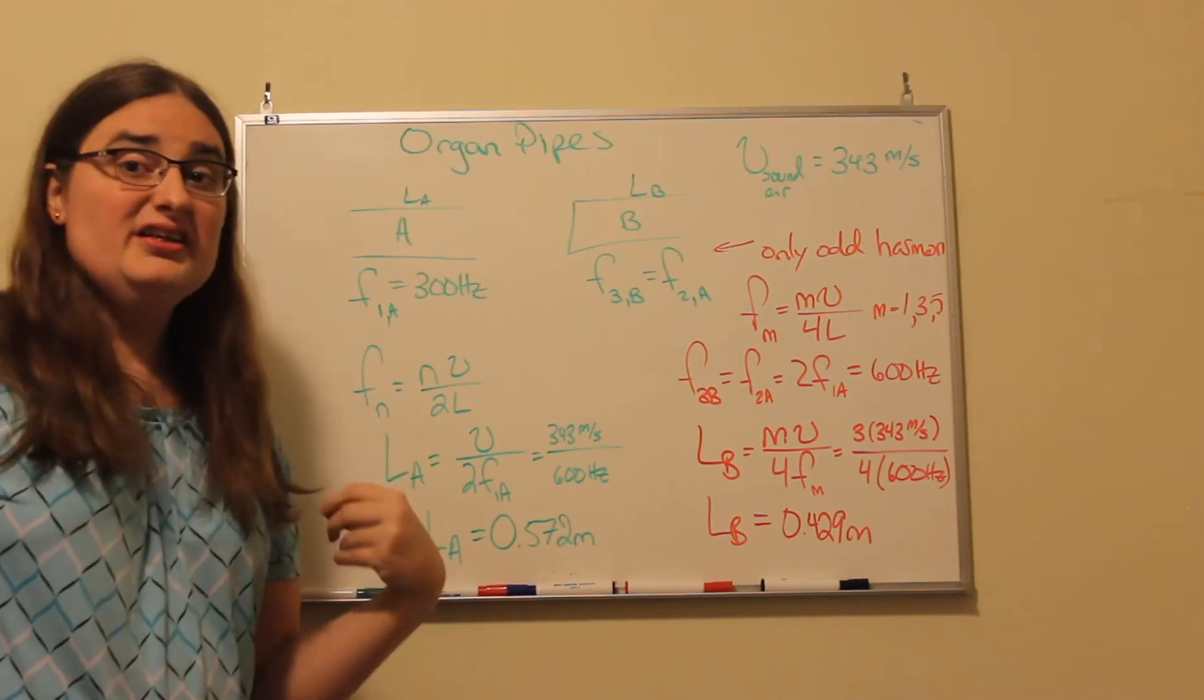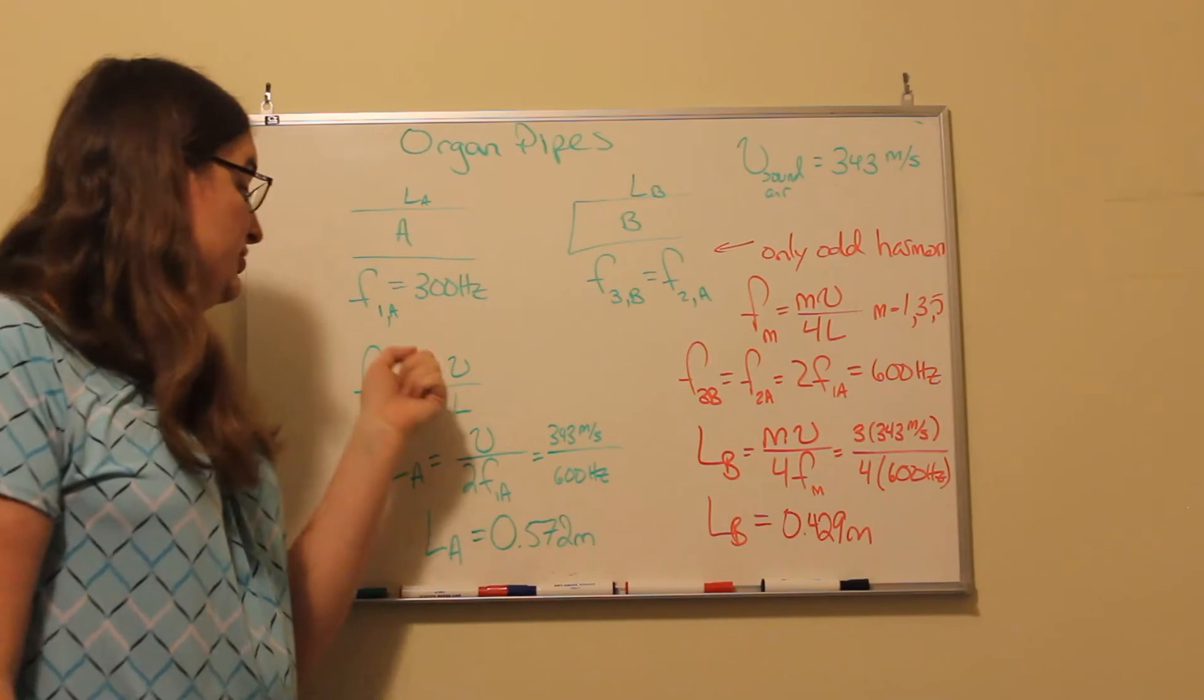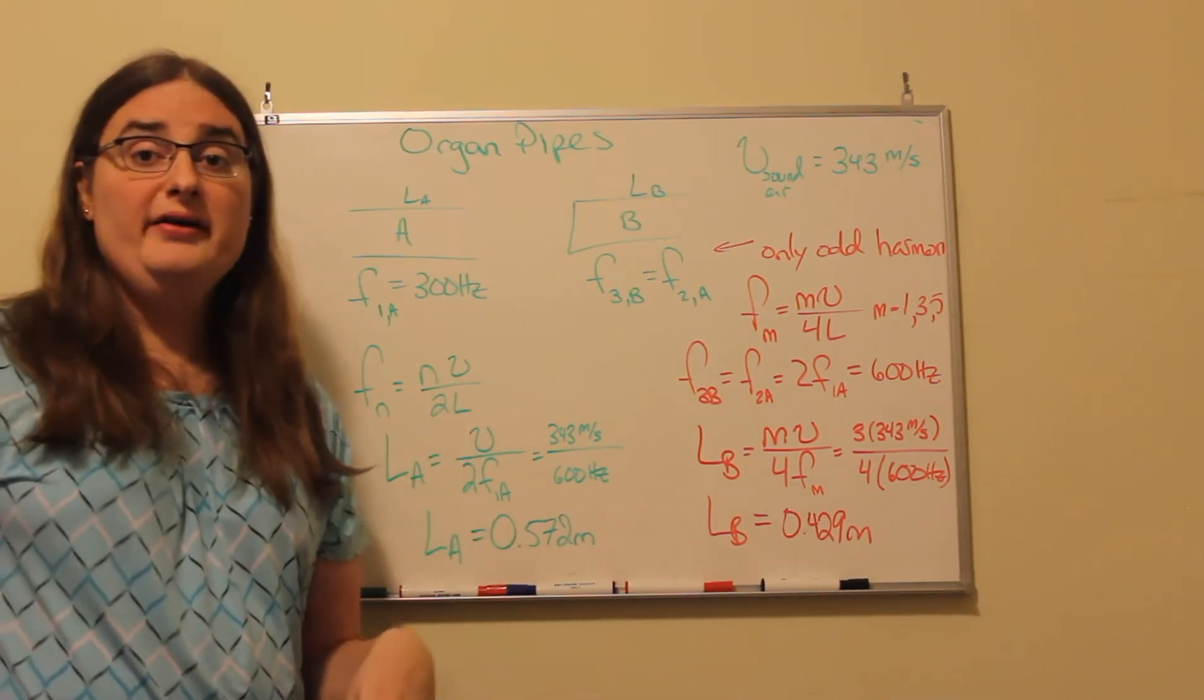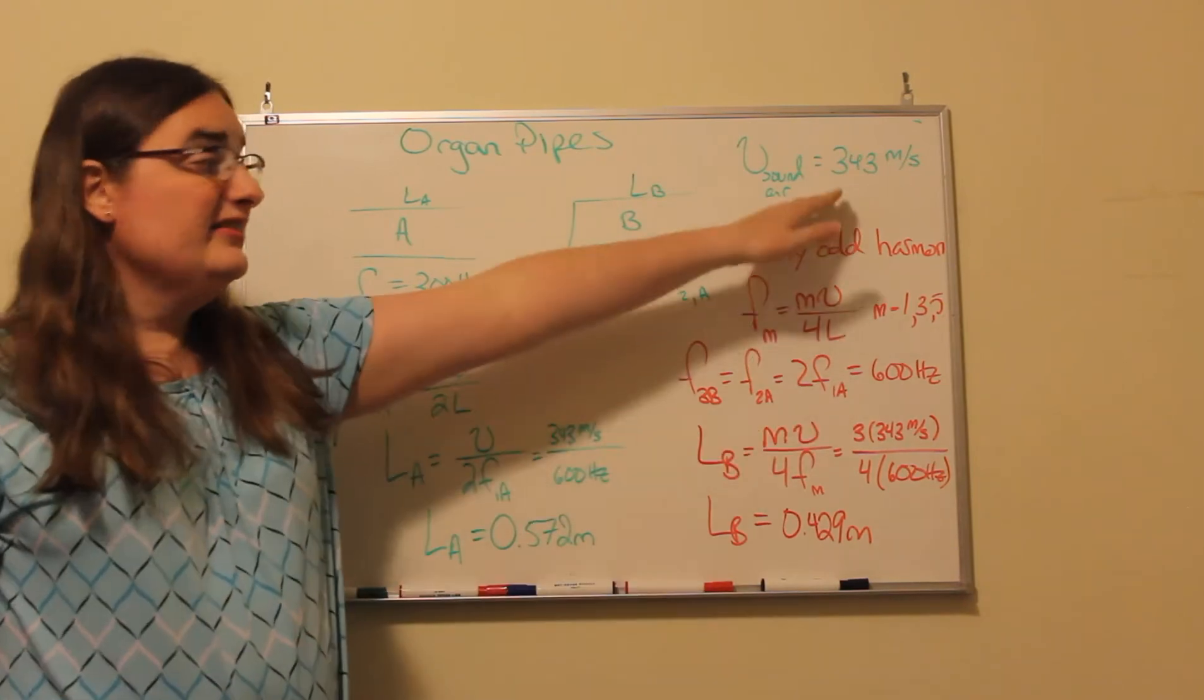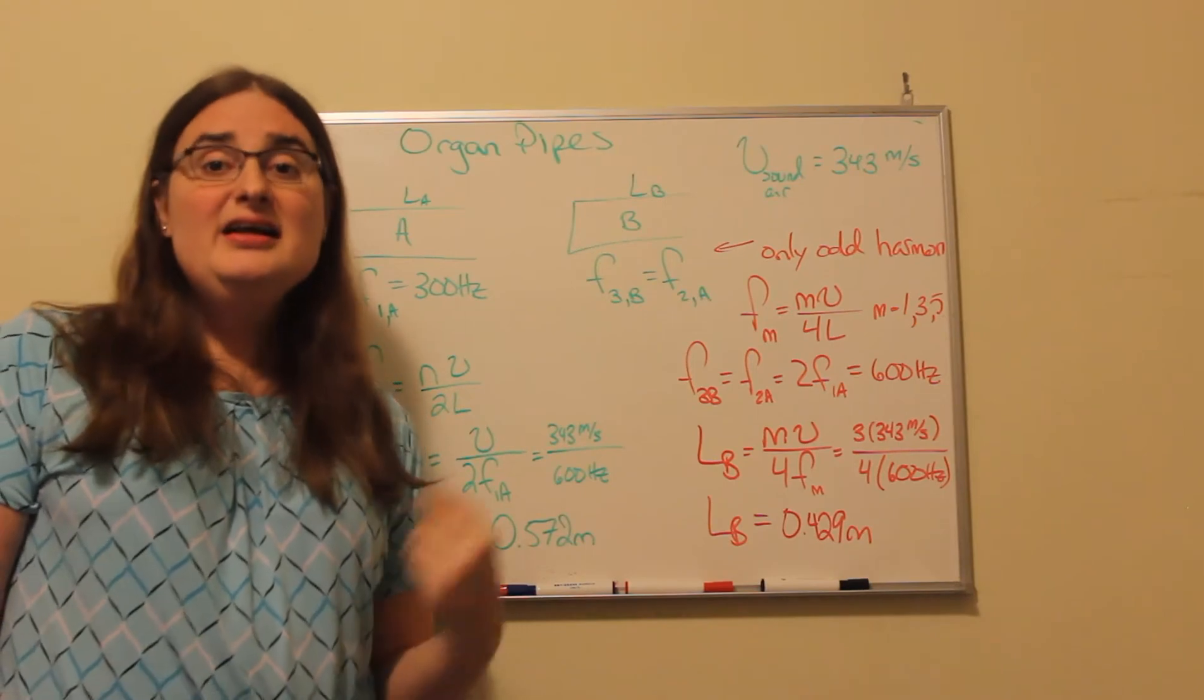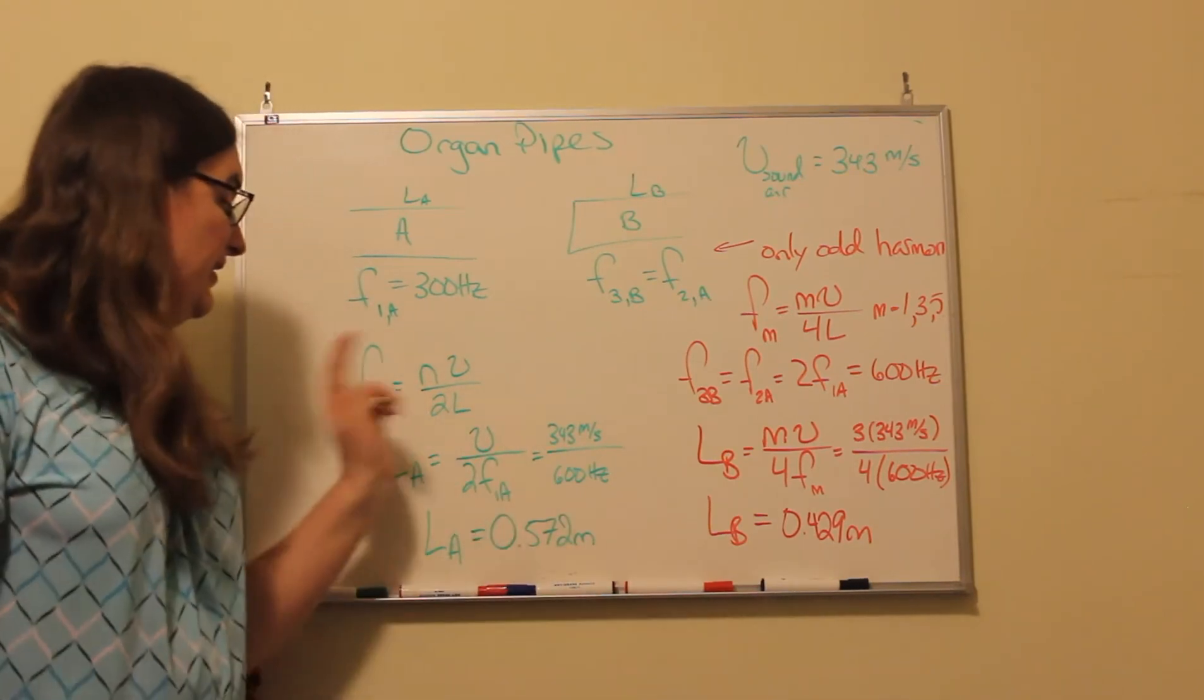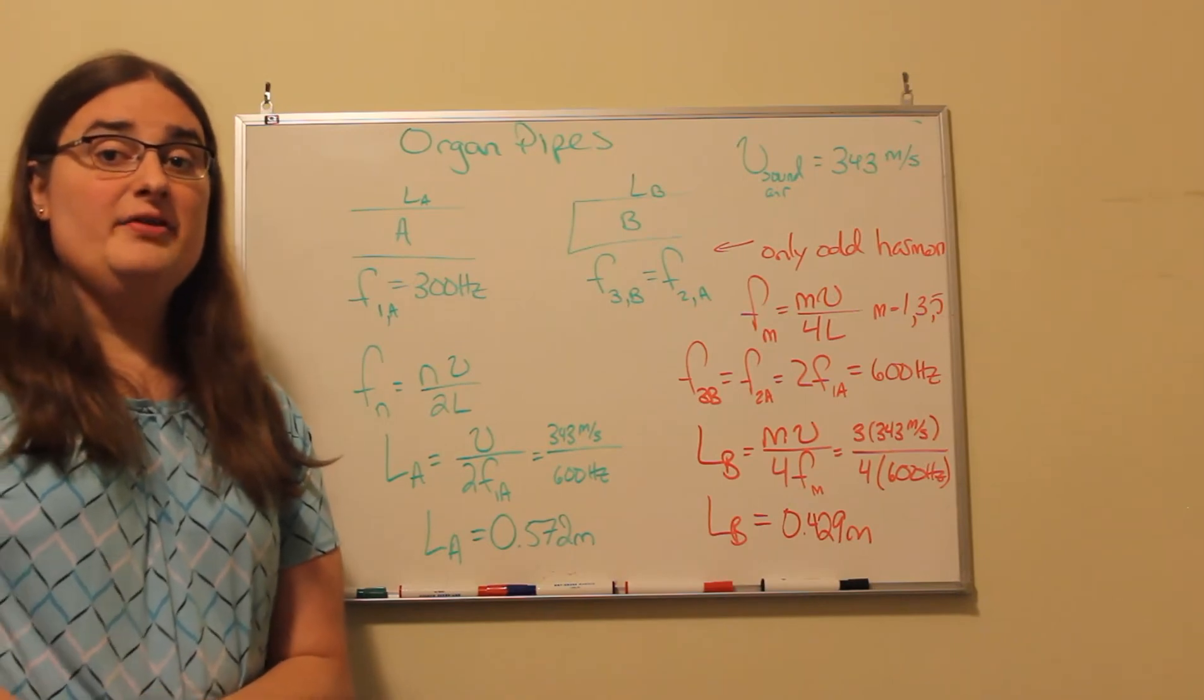The frequency would be equal to our harmonic number n, which for the fundamental would just be one, times the speed of the wave, which is the speed of sound. And in this class, we use 343 meters per second for the speed of sound in air, unless told otherwise.